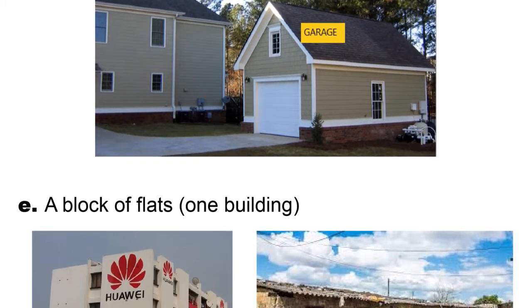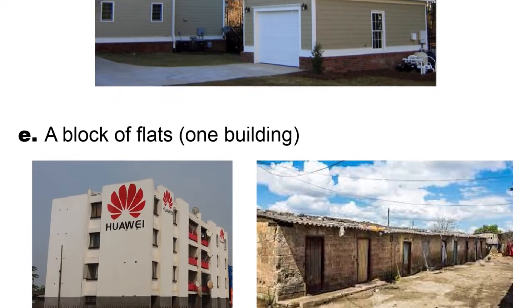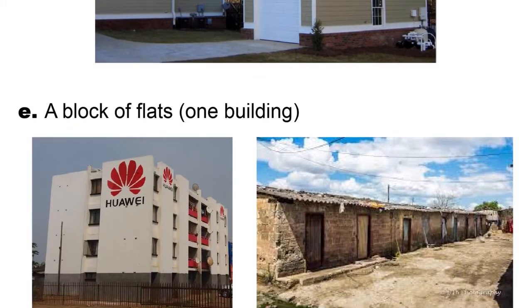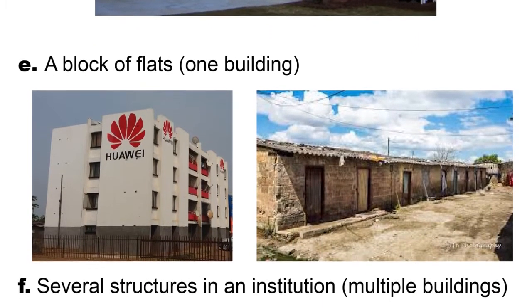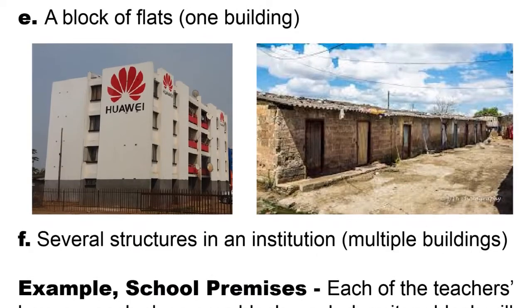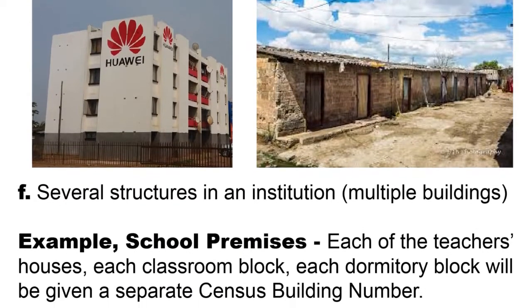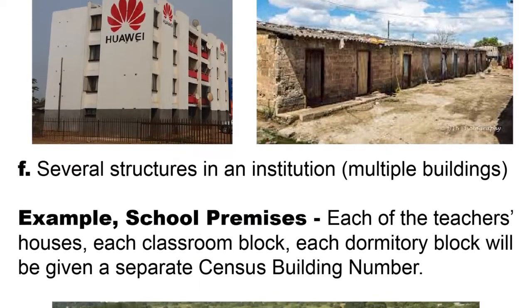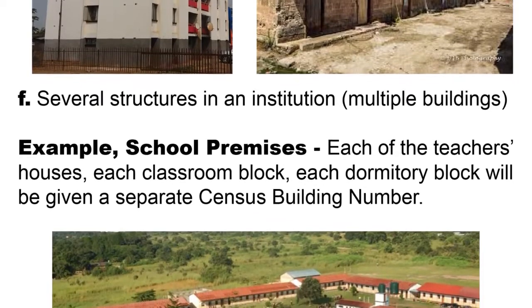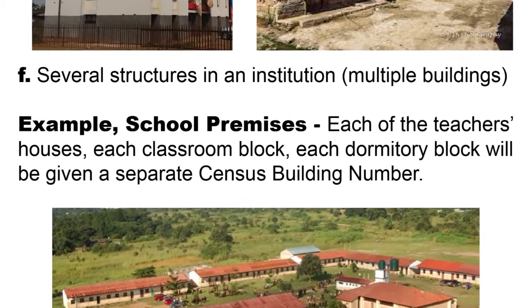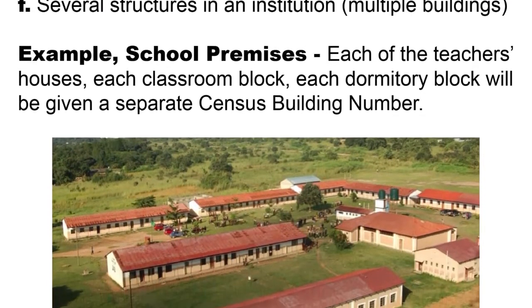Category F: several structures in an institution will be treated as multiple buildings. For example, on school premises, each teacher's house, each classroom block, and each dormitory block will be given a separate Census Building Number.